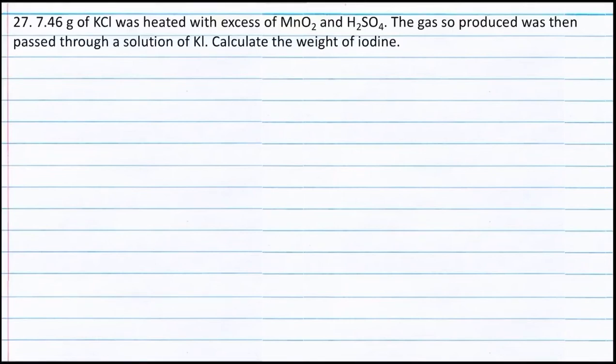Question 27. 7.46 g of potassium chloride was heated with excess of MnO₂ and H₂SO₄. The gas so produced was then passed through a solution of potassium iodide. Calculate the weight of iodine.